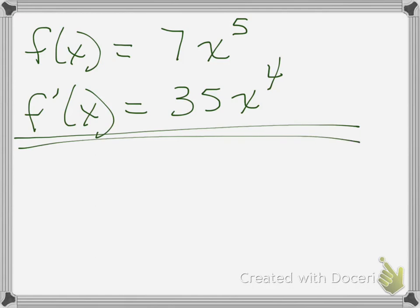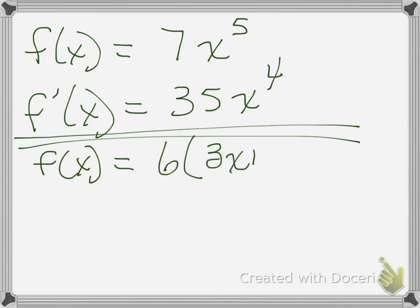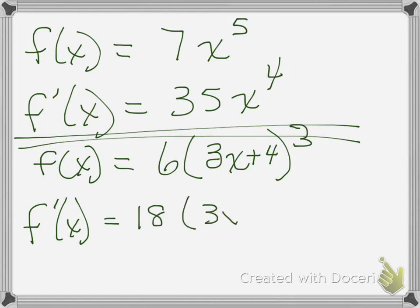That's just the pure power rule. Now let's throw a chain rule in with that. So if you have f of x equals 6 times (3x plus 4) to the 3rd power, then your derivative — use the power rule first — 3 times 6 is 18. Don't touch the inside at all. Raise it to the one less than 3 power, so that's squared. Now you need to take the derivative of the inside, which gives times 3.